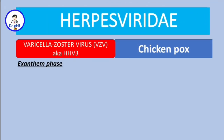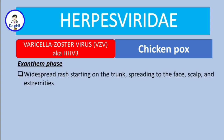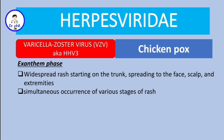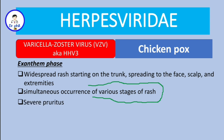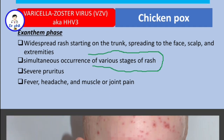The exanthem phase of chickenpox involves a widespread rash starting from the trunk and spreading to the face, scalp, and extremities. A key feature is the simultaneous occurrence of various stages of the rash — this helps differentiate VZV from other rashes. The rash can be pruritic, and is accompanied by fever, headache, and muscle or joint pain.